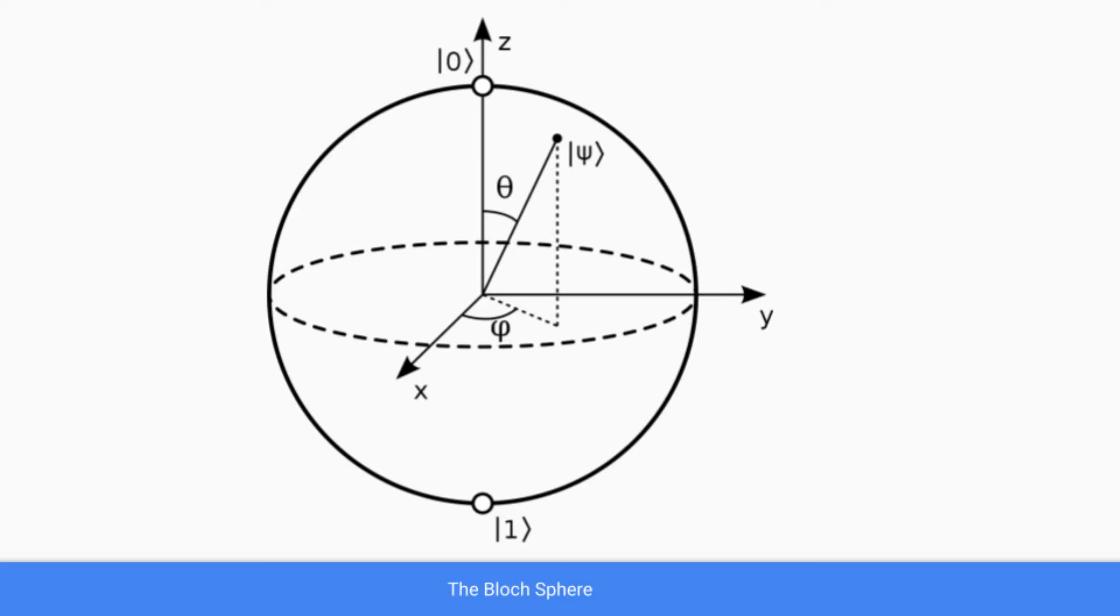The Bloch sphere is another representation of the qubit. It gets really complicated so I won't go into too much detail, but just know that classical bits can only be at the top and the bottom of the sphere. They can only be in state zero at the top and state one at the bottom. However, qubits can be at any point on the surface of the sphere, which allows you to visualize how much more dynamic qubits can be compared to classical bits.